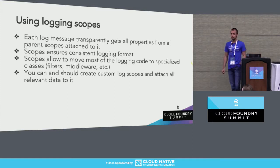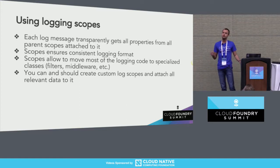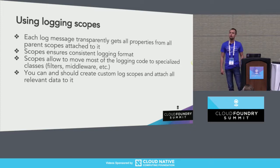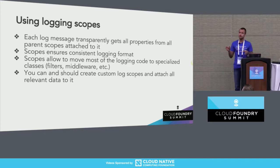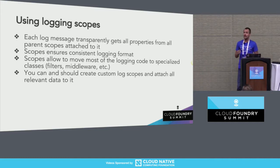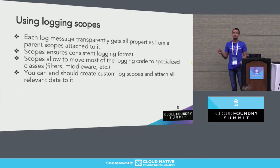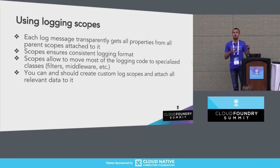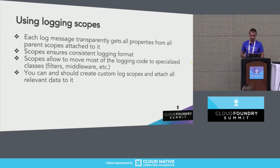Most importantly, we use the BeginScope method of the ASP.NET Core logger. This method creates a custom scope — a new field that will be attached to each subsequent message within that scope. By default, ASP.NET Core creates a scope for each request and attaches fields such as request ID. But nothing prevents you from creating custom scopes, and they don't have to wrap only requests. You can wrap any other functionality into custom scopes as well, such as a database transaction.